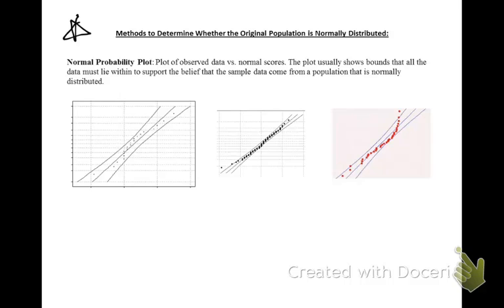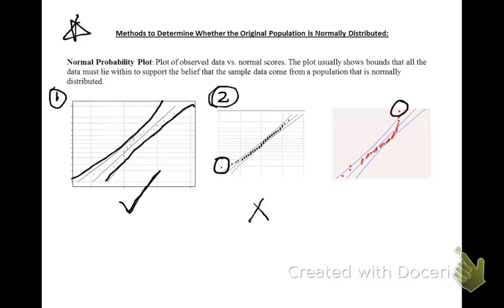Looking at this first box plot, I'm checking to see if there's any values that fall outside of the lower bound and the upper bound, but since all of our observed values fall within the bound, it looks like our data could come from an originally normal population. In the second normal probability plot, there's a data value that falls outside the bound, so it looks like it's probably not originally normal. Same thing in this third one, data values that fall outside or directly on the bounds.